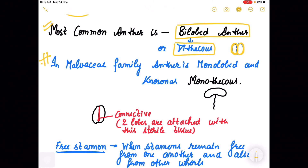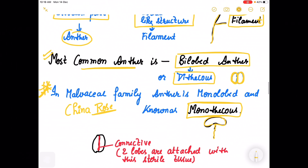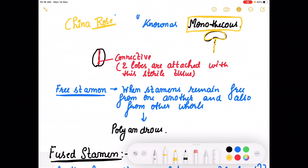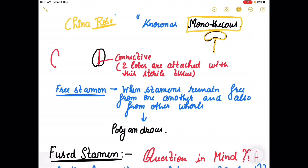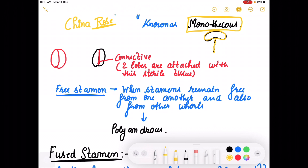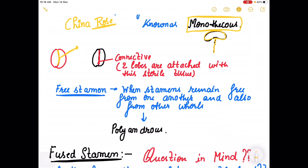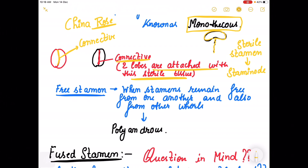There is one exception in the Malvaceae family — in China rose, the anther is monolobed, having only one lobe, and this is known as monothecous. Otherwise, the majority of flowers have bilobed anther. These two lobes are connected in the center by a tissue known as connective — it is a sterile tissue to which two lobes are attached. Also, a sterile stamen is known as staminode.